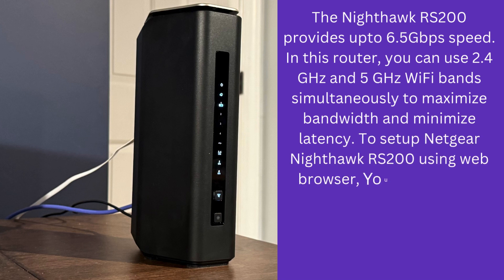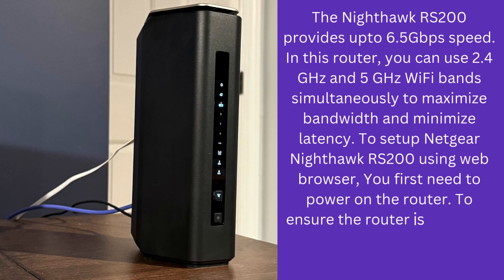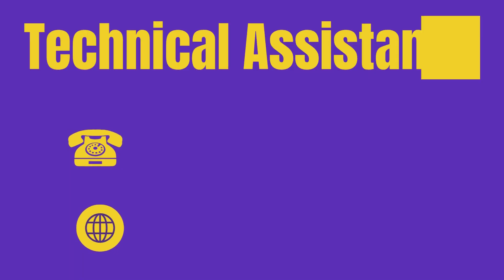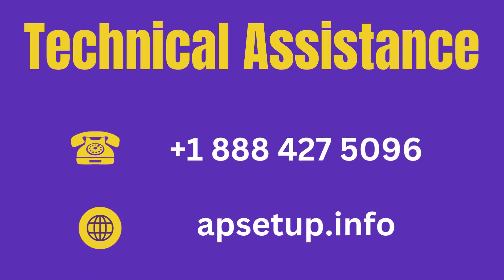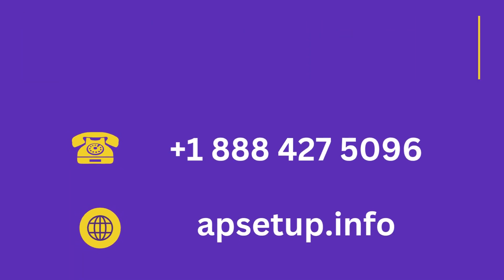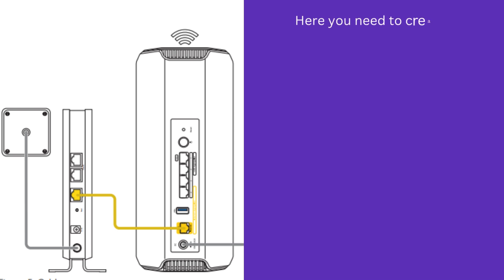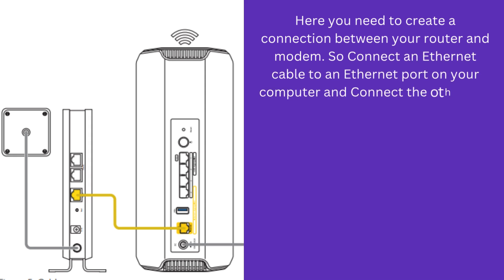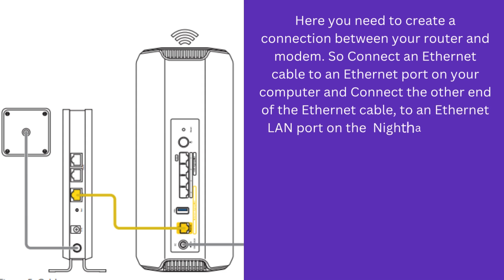To set up the Netgear Nighthawk RS200 using a web browser, you first need to power on the router. To ensure the router is receiving power, its power LED will light up. Here you need to create a connection between your router and modem. Connect an Ethernet cable to an Ethernet port on your computer and connect the other end of the Ethernet cable to an Ethernet LAN port on the Nighthawk RS200 router.